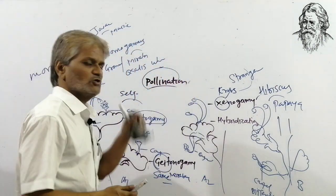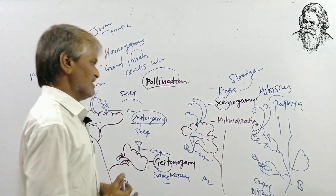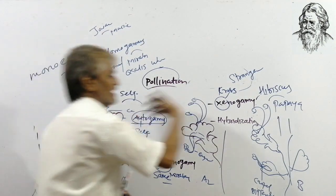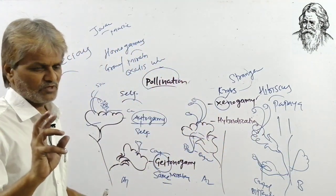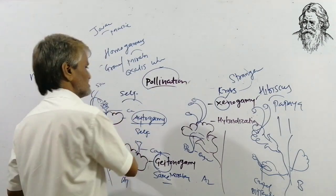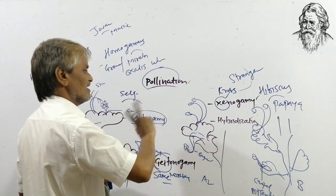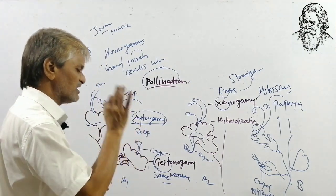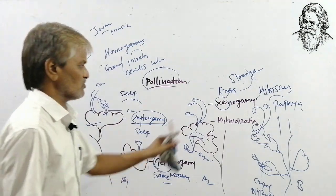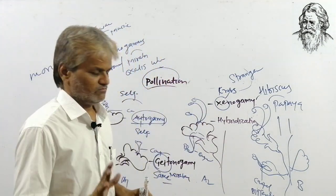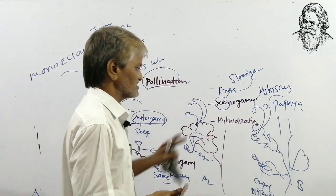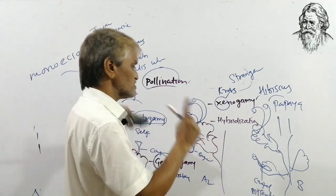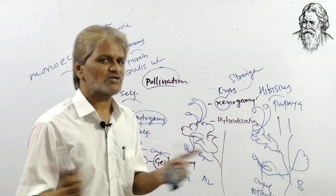Hybridization: transfer of pollen grains from one plant body to another plant body of a different species is called hybridization. Pollination takes place between two genetically dissimilar plants of different species — that is called hybridization. Pollination takes place between two plants of two different species, which can be genetically different or even of different genera.